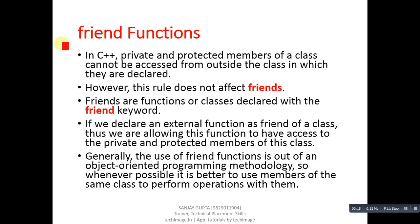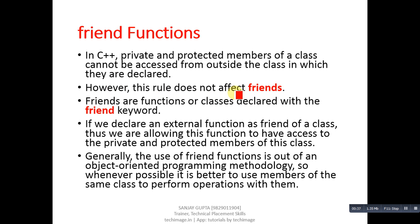In C++, private and protected members of a class cannot be accessed from outside the class in which they are declared. However, this rule doesn't affect friends. If you want to access private and protected members of a class outside the class, you can use the friend keyword.